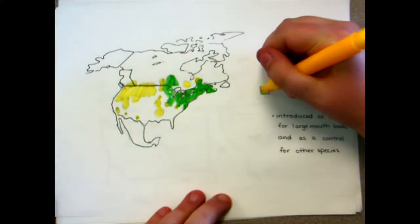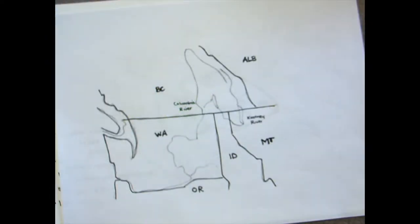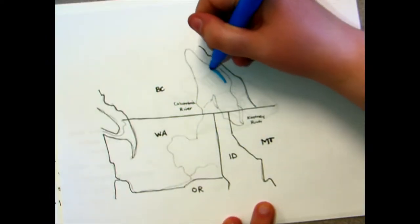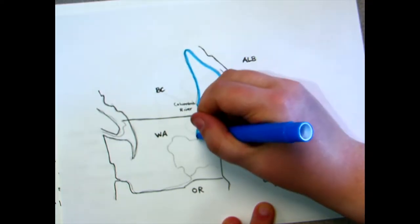Extension of pumpkin seed range in Canada began in the early 1900s when they were introduced into British Columbia for fishing, as a control for other species, and as food for predators such as largemouth bass. They were initially released in the Columbia system but quickly spread to the Kootenai River system and are now found in Alberta and down the west coast of California.